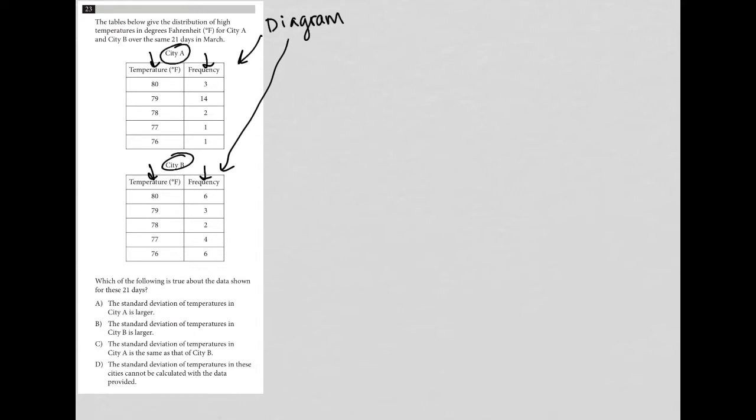So the question says the tables below give the distribution of high temperatures in degrees Fahrenheit for city A and city B over the same 21 days in March. It goes on to say which of the following is true about the data shown for these 21 days.